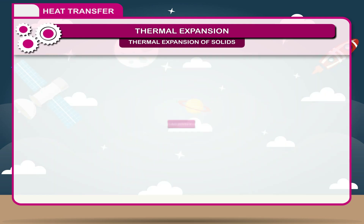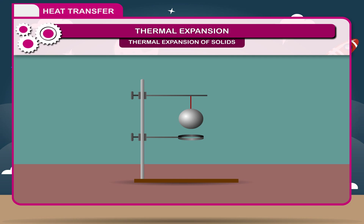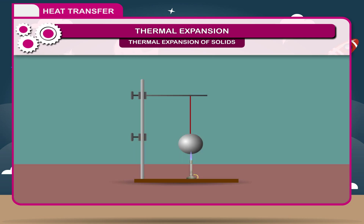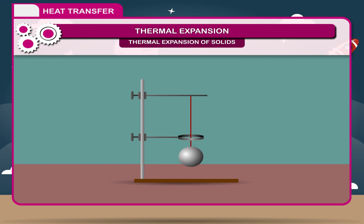Activity: An iron ring-ball apparatus consists of a metallic ring and a metallic ball. The outer diameter of the ball is equal to the internal diameter of the ring. Initially, the ball easily passes through the ring. Now, heat the ball strongly for a few minutes. You will observe that the ball does not pass through the ring because its diameter has increased. After some time, when the ball is cooled, it again passes through the ring. This shows that a solid expands on heating and contracts on cooling.